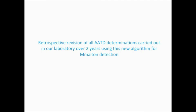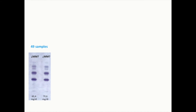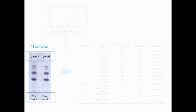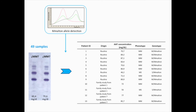We performed a retrospective revision of all Alpha-1 deficiency determinations carried out in our lab over two years using this new algorithm. We detected 49 samples with one or two M alleles and Alpha-1 levels discordant with that phenotype. All of these samples were analyzed with the M. Malton allele-specific genotyping assay, and in nine of these samples the M. Malton variant was detected.